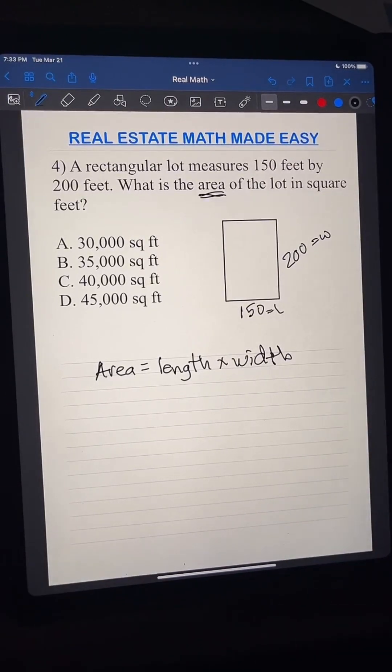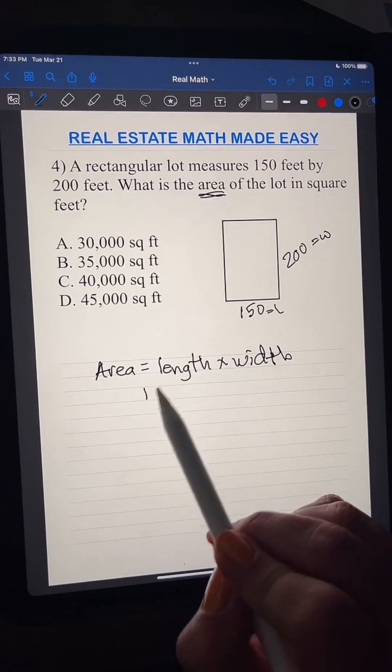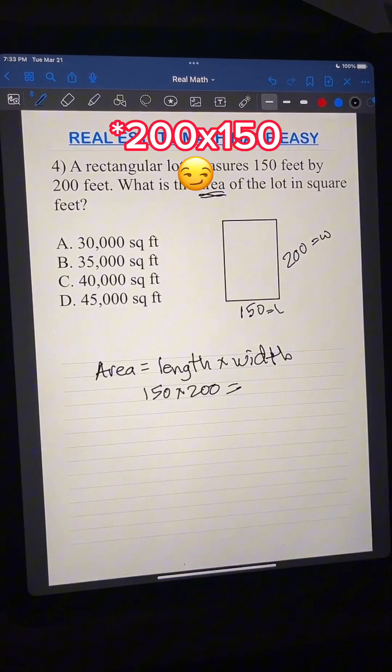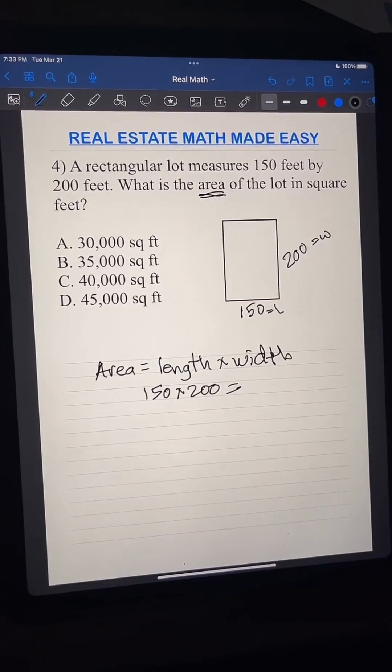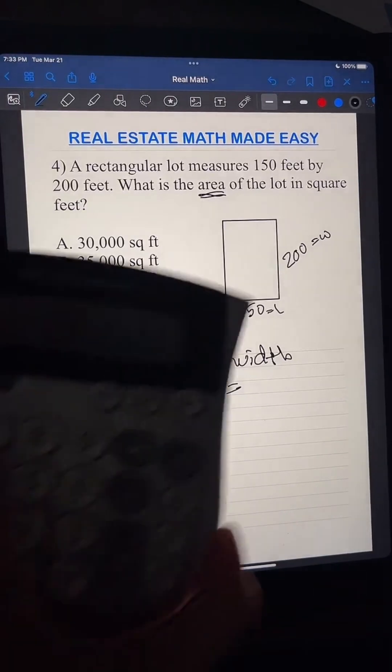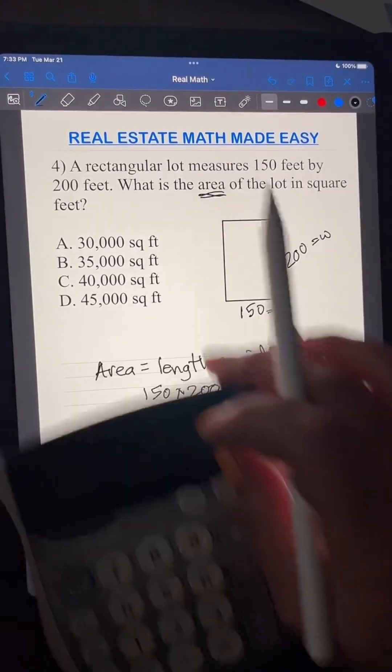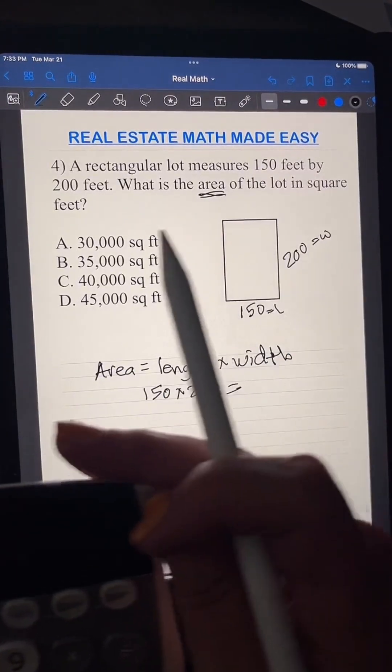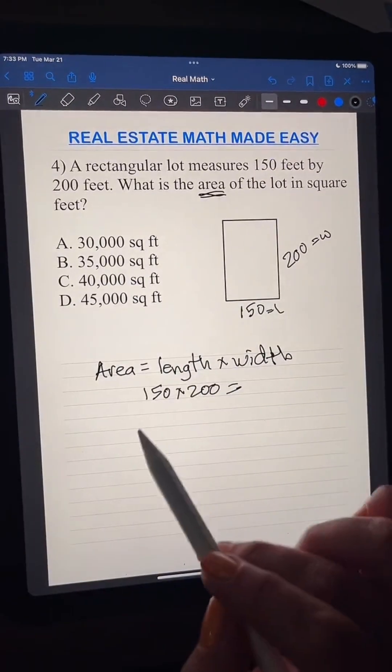Okay, so this is your length, and this is your width. It doesn't matter. It really doesn't matter because we're multiplying, okay? When you're multiplying, it doesn't matter if you do 150 times 200 or 200 times 250. It's going to give us the same exact thing, okay?